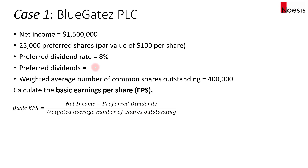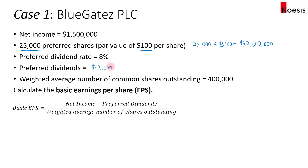The preferred dividends are based on the par value of the preferred shares. There are 25,000 preferred shares, and each has a par value of $100. So if you take 25,000 times $100, that's $2.5 million — the total par value of the preferred shares. The preferred dividends are based on the par value multiplied by the preferred dividend rate of 8%, which gives us $200,000 of preferred dividends.